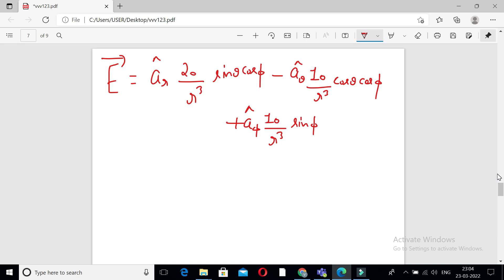Now we can find the value of D. Given coordinates are at 2, pi by 2, and 0.